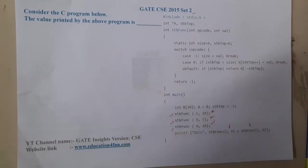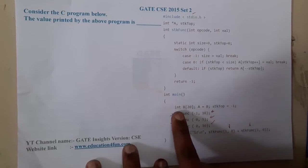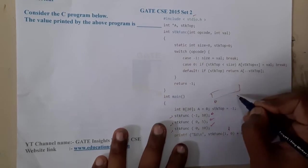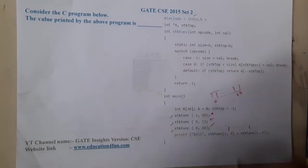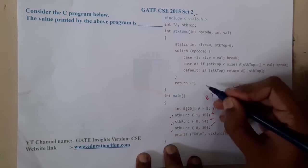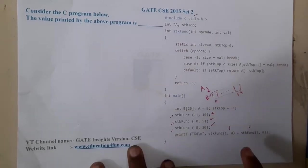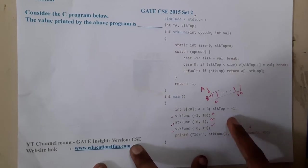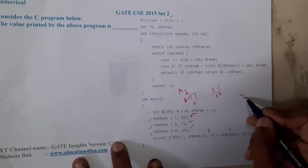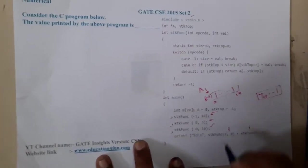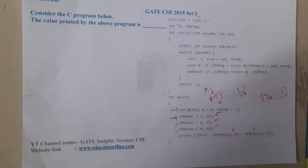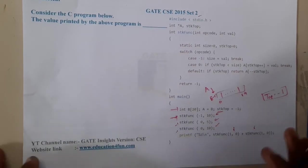Let us identify the logic. In int main, we are creating an array b of size 20, from index 0 to 19. We are storing b in a, so a and b point to the same array. Then we create stk_top, which is initialized to minus 1 — this is essentially a stack. Now the first call is stk_fun(-1, 10).